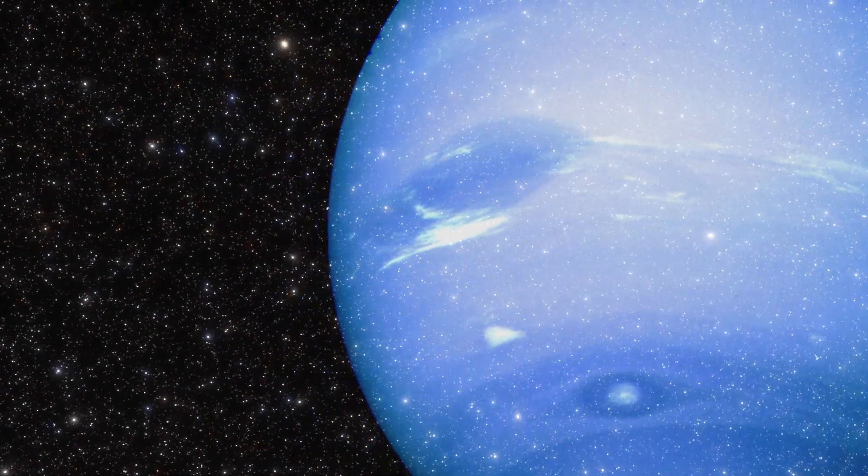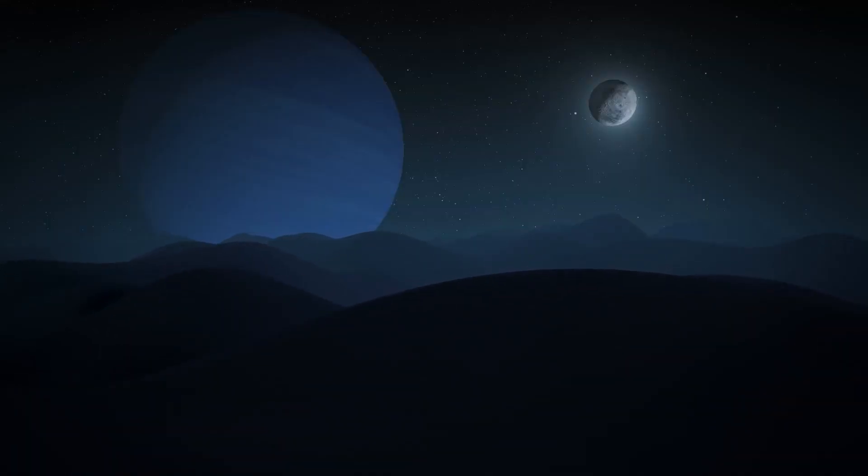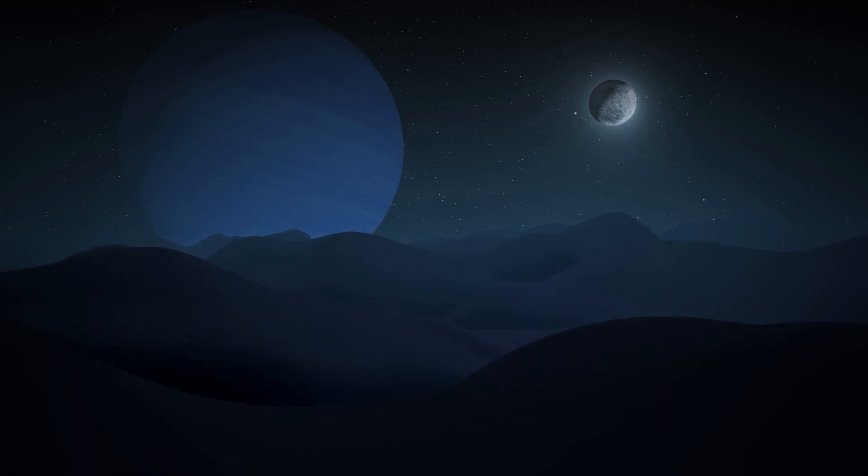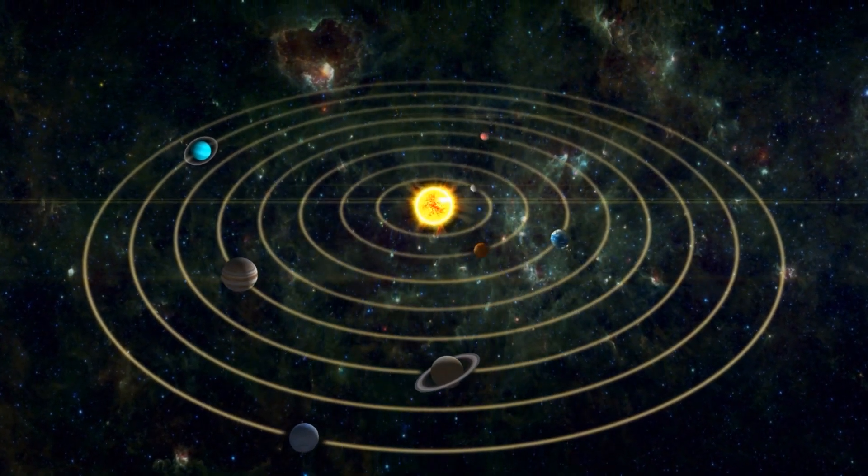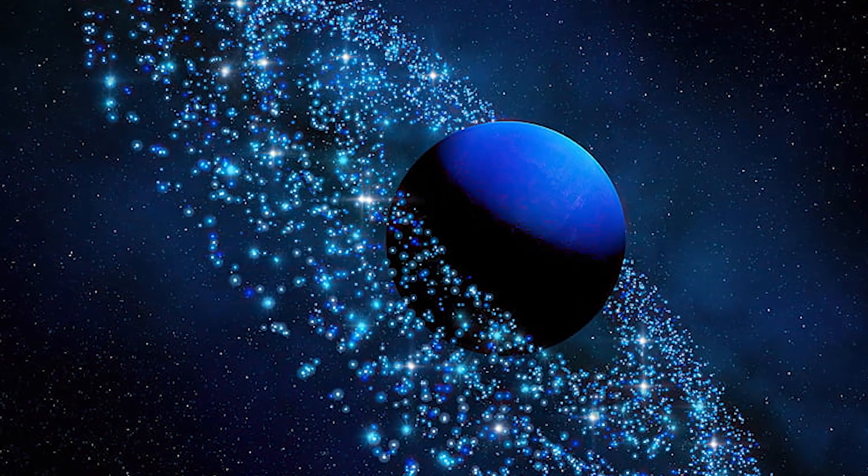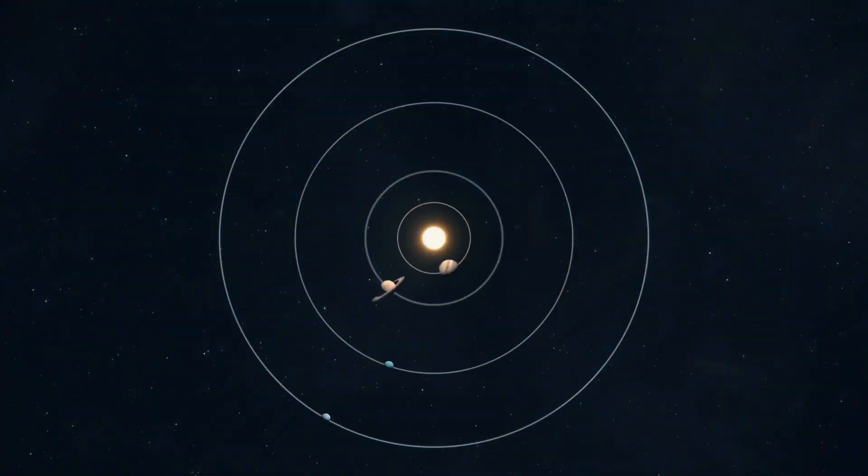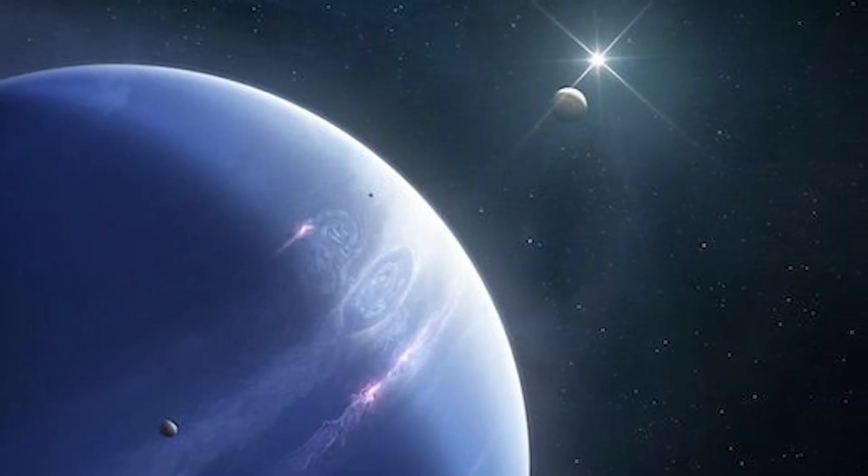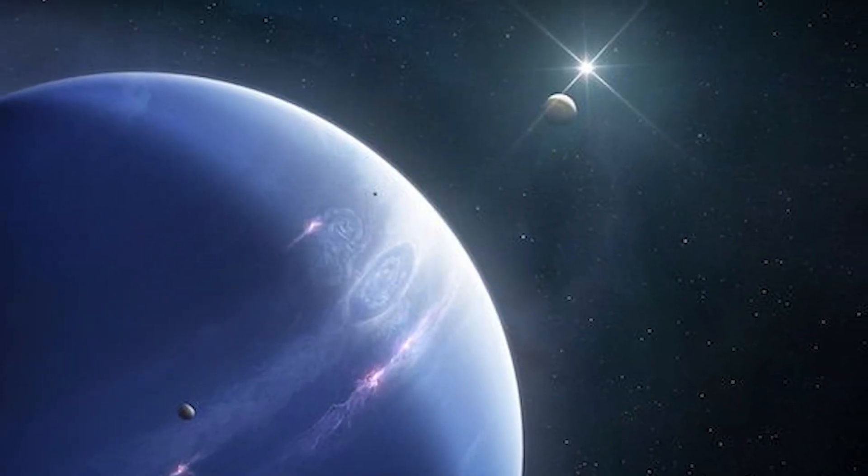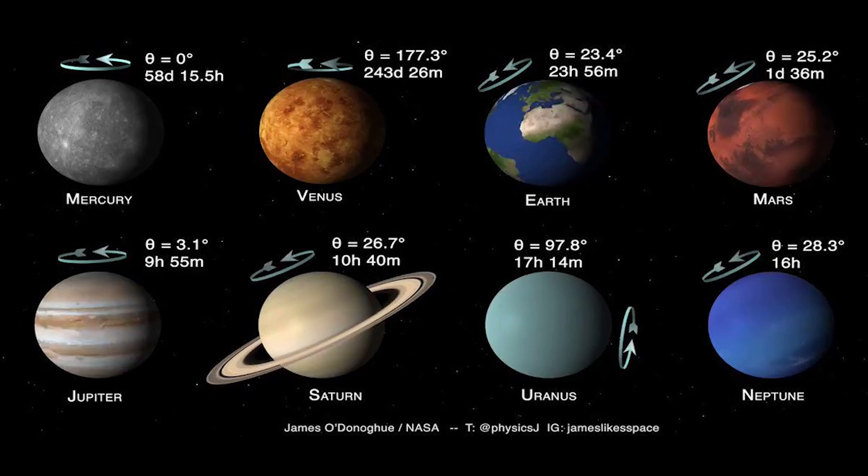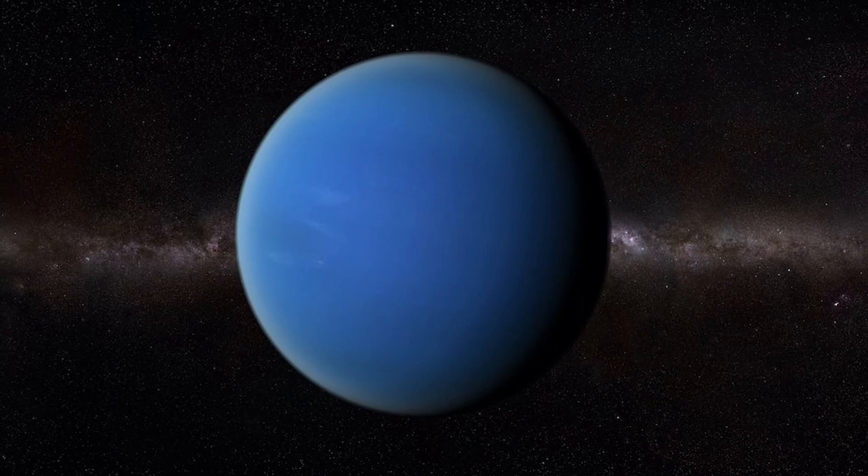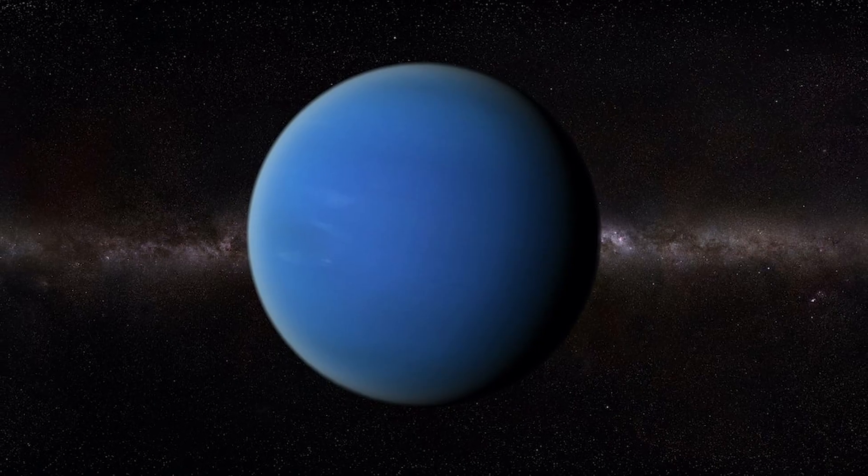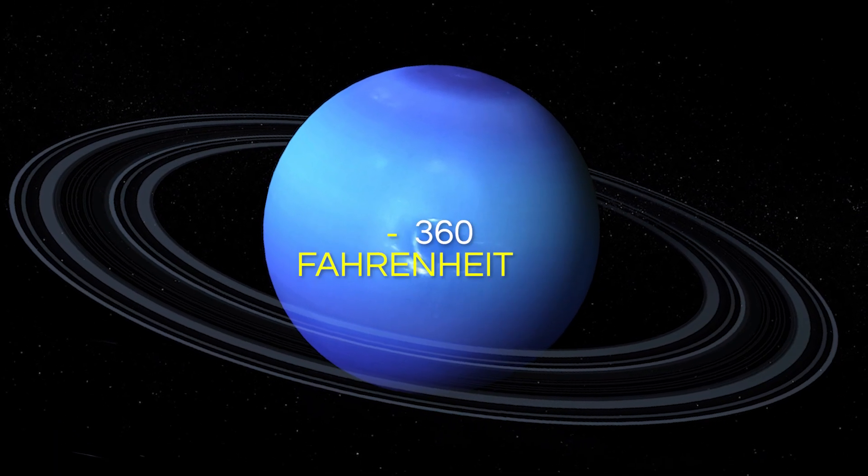Within this enigmatic ice giant, hidden amidst its frigid exterior, lies a tantalizing possibility. A secret oasis that defies reason. A theoretical hot ocean that defies Neptune's distant proximity to the Sun. As sunlight embarks on a four-hour journey to graze the planet's surface, Neptune remains one of the coldest objects in our cosmic neighborhood, with an average atmospheric pressure plunging to a bone-chilling negative 360 degrees Fahrenheit.